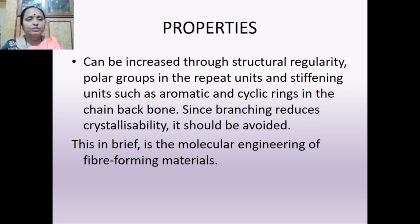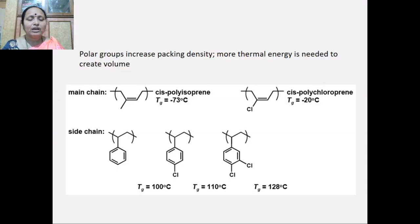Crystalline ability can be increased through structural regularity, polar groups in the repeat units, and stiffening units such as aromatic and cyclic rings in the chain backbone. Since branching reduces crystalline ability, it should be avoided. This is in brief the molecular engineering of fiber-forming material, taking into consideration polar groups in both the main chain and side chain.